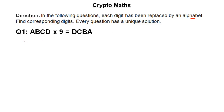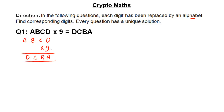So the first thing that you have to do is to write the question in this way: ABCD multiplied by 9 is giving you DCBA. Now you notice here that you have a 4-digit number and you multiply this number by 9 and you get a 4-digit number again. So think of A.